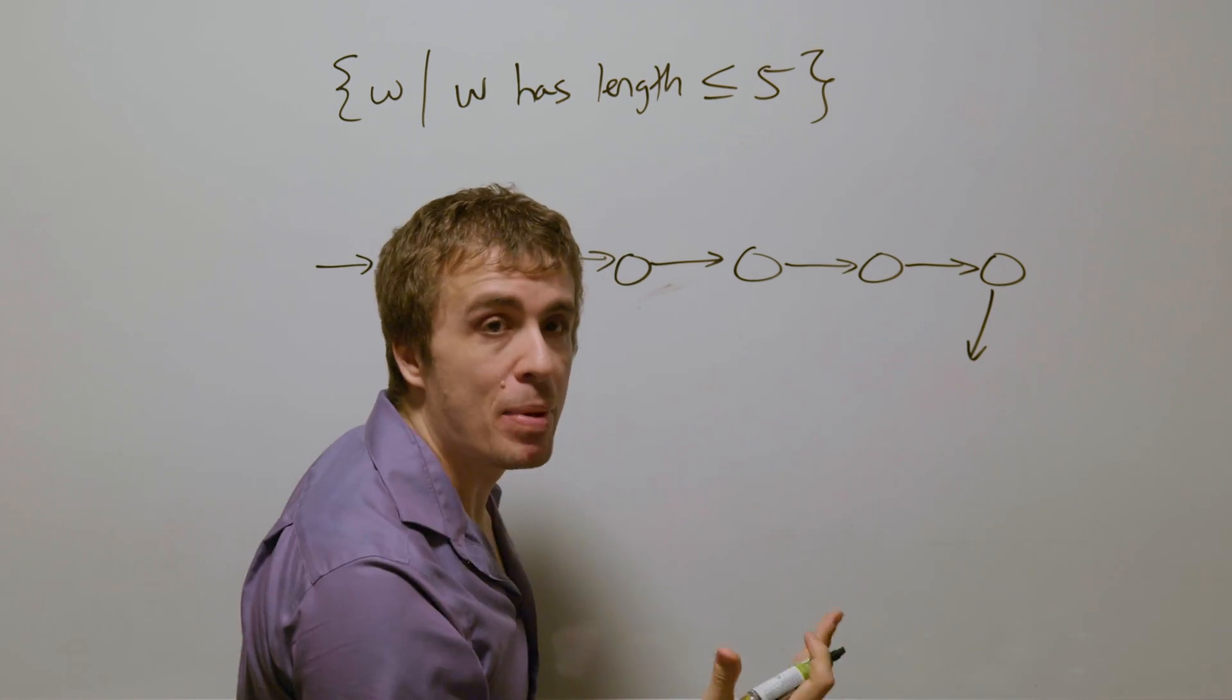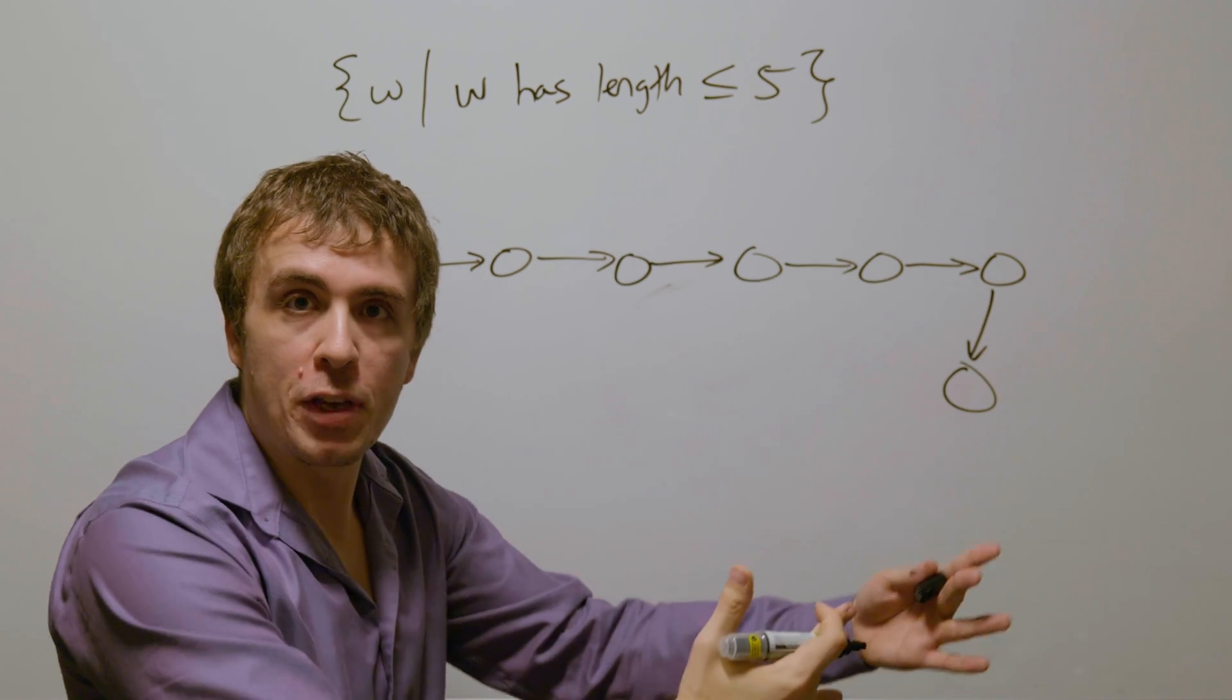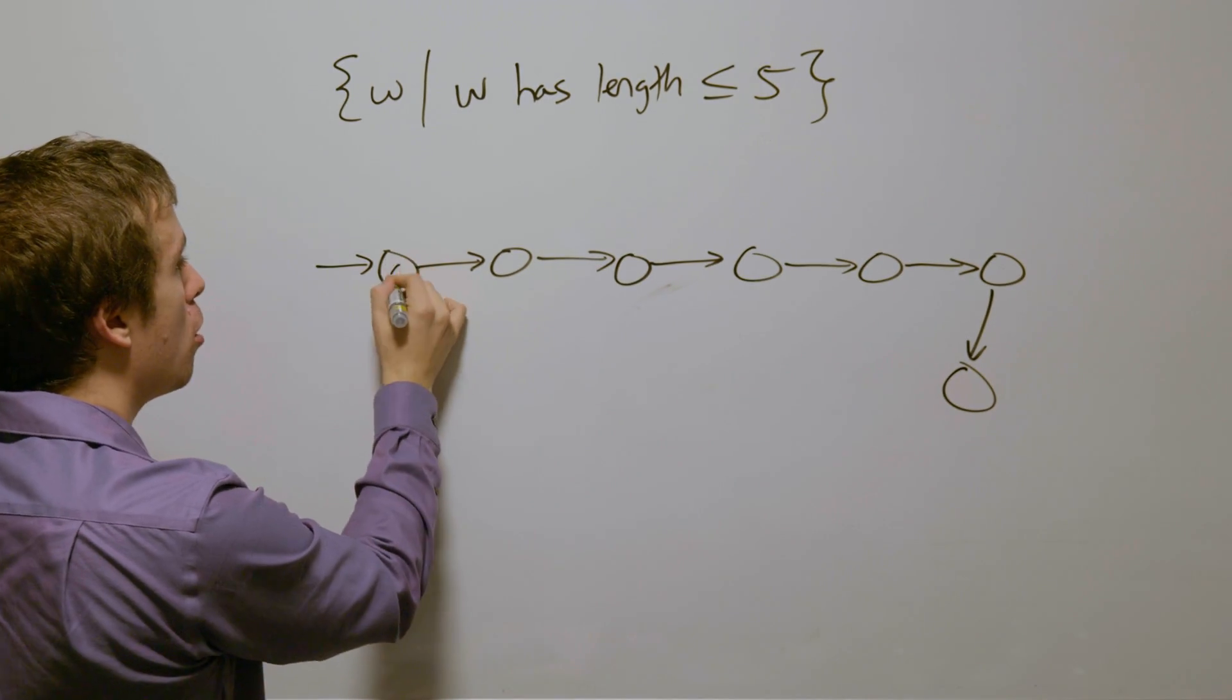And then this last one is the sixth one, and so therefore should not be an accepting state. But all the other ones before, we've read five or fewer characters and should all be accepting.